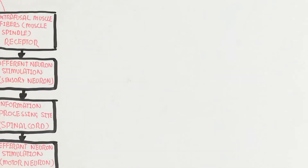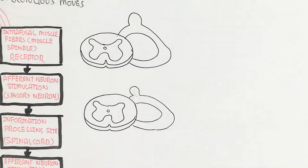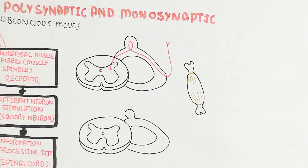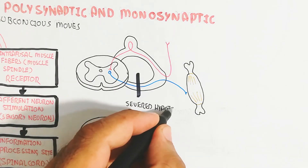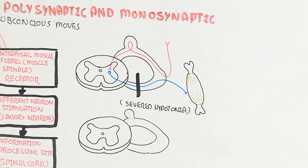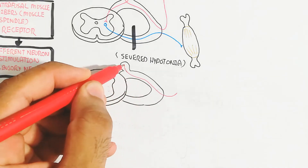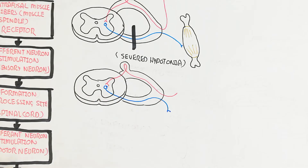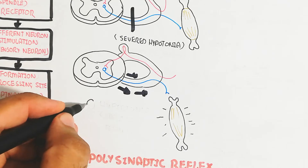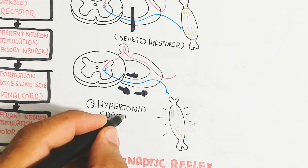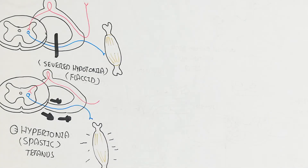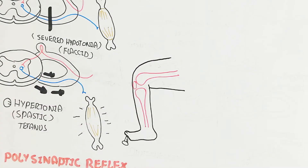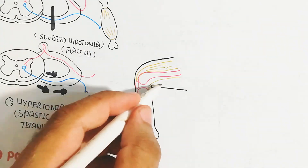If the motor neuron has a lesion or problem, it leads to severe hypotonia — meaning the flexed muscle cannot move easily. The motor neuron cannot give the signal, so the muscle will not relax or contract normally, resulting in very slow movement. If the inhibitory interneuron does not work, hypertonia occurs — for example, spastic muscle — such as that caused by tetanus infection.